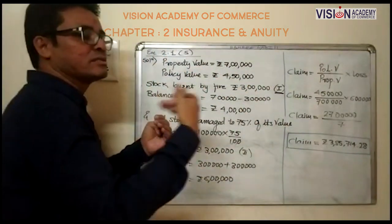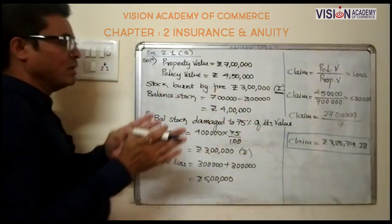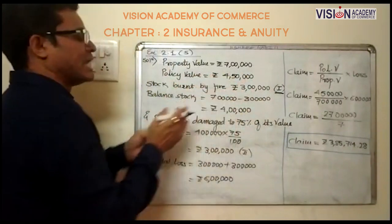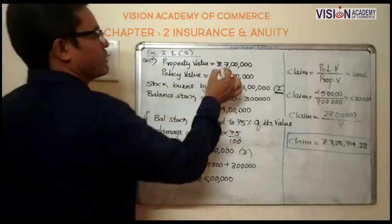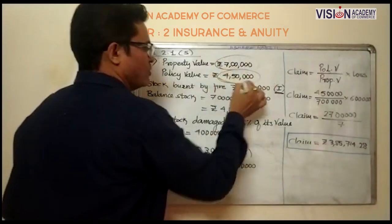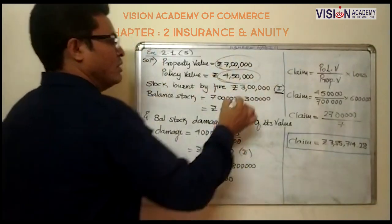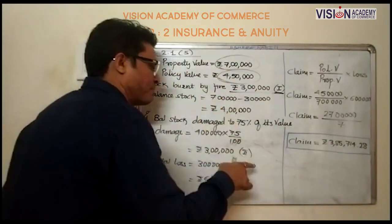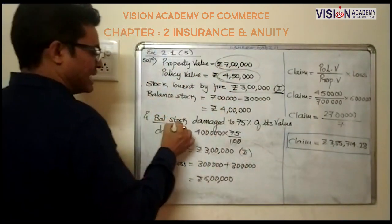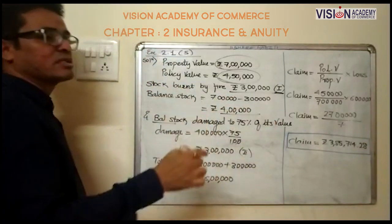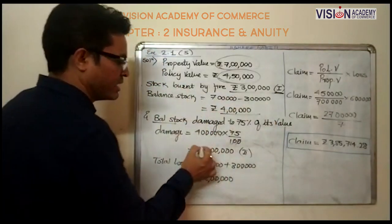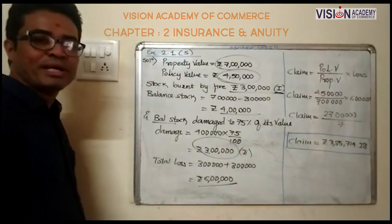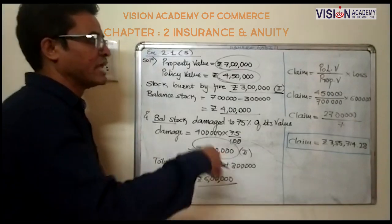The balance stock is also damaged. The balance stock is 7 lakhs minus 3 lakhs, which comes to 4 lakhs. Property value 7 lakhs, policy value 4 lakhs 50 thousand. First loss is 3 lakhs. Second loss: 75 percent of balance 4 lakhs is again 3 lakhs. So total loss comes to rupees 6 lakhs.